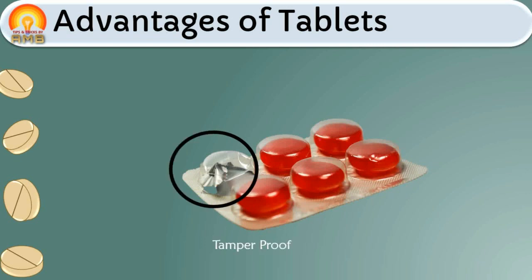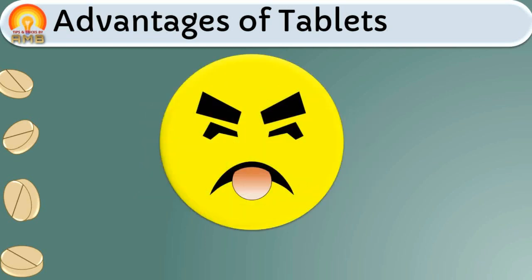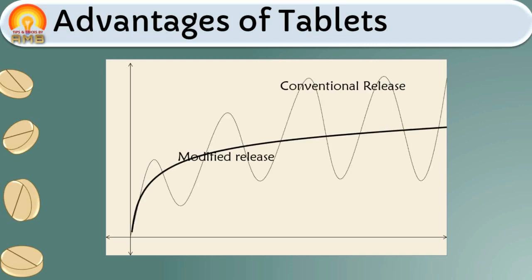Tablets are designed and packed as tamper-proof dosage forms, so there are no chances of adulteration or mixing. Tablets are easy to administer. Bitter and nauseous substances can also be converted into tablet dosage form by applying a suitable coat to mask the bitter or nauseous taste, converting them to a palatable form. It is also easy to make modifications to convert tablets into various modified-release formulations.